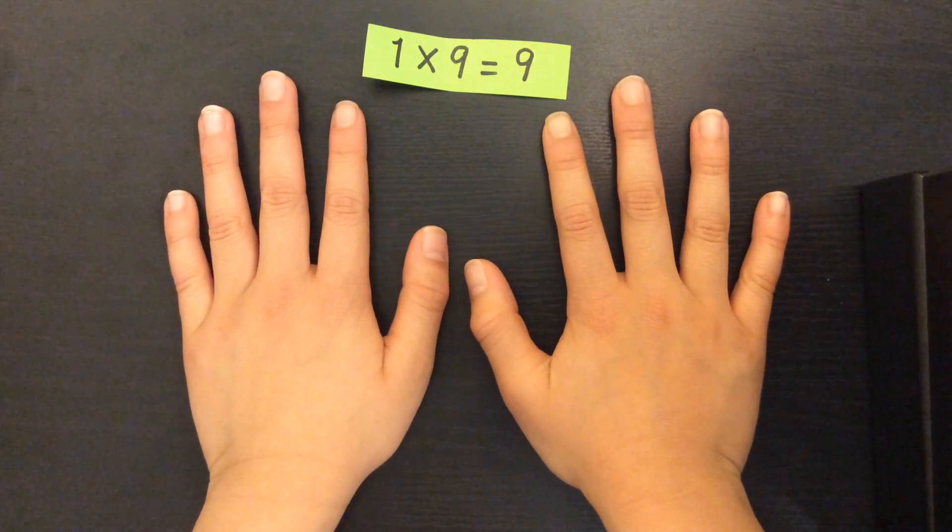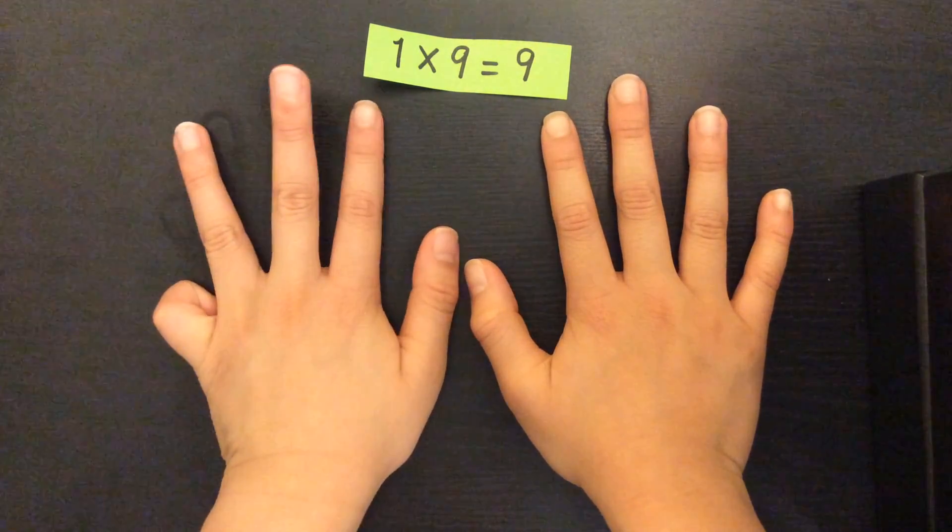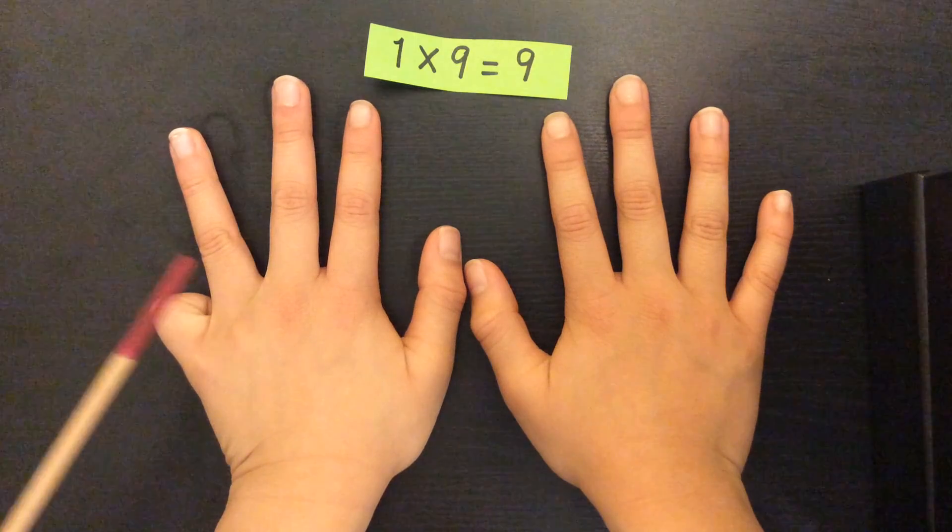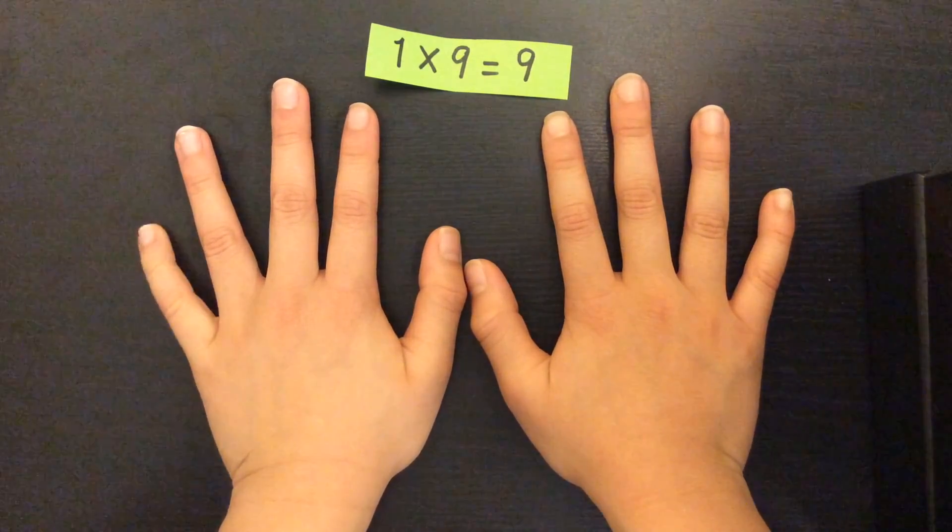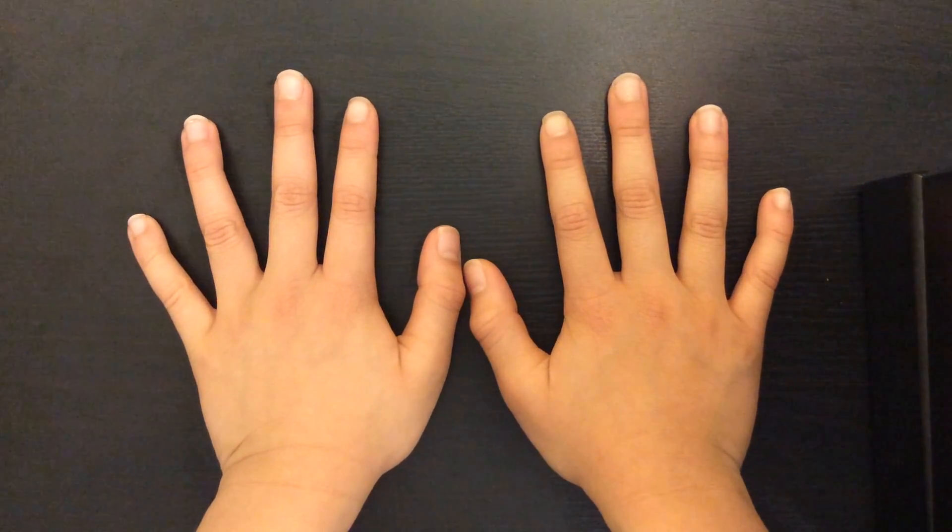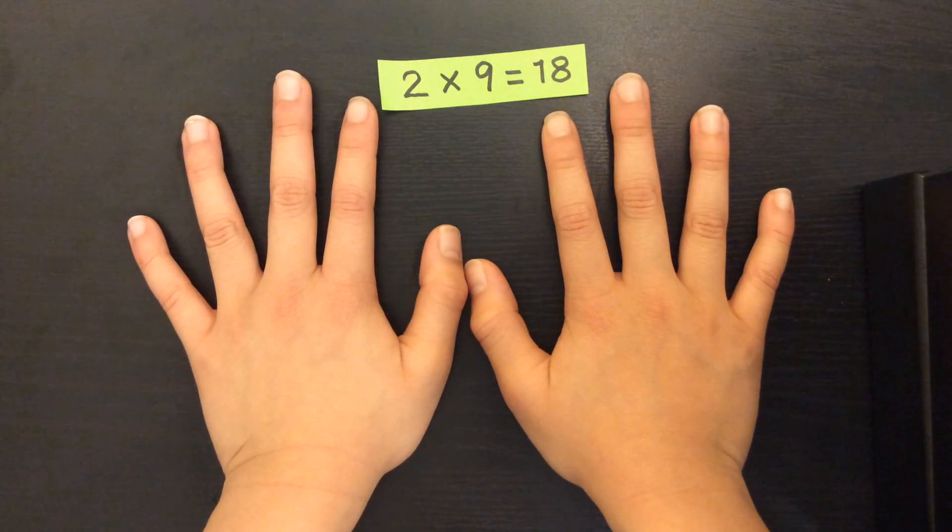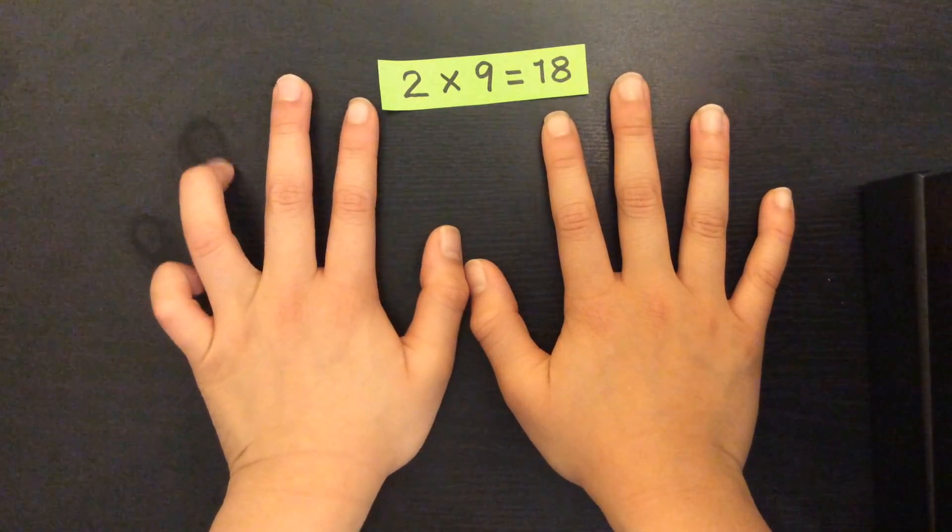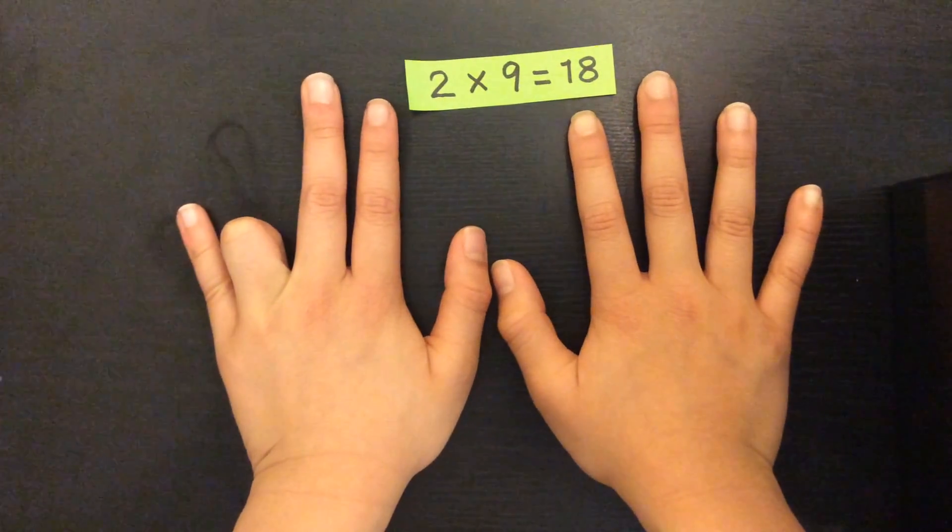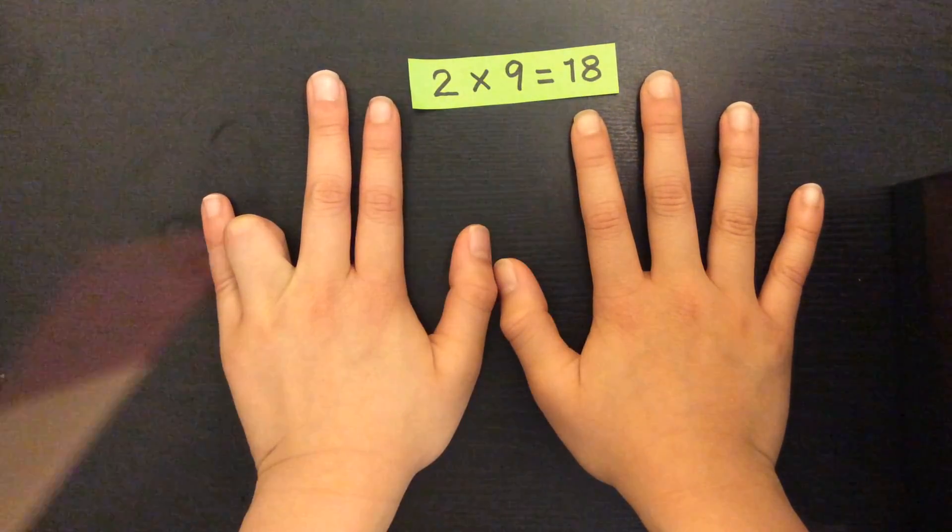Now, one times nine. I close only my first finger. Nine remains. One times nine is nine. Two times nine. I close only my second finger. I have one and eight. That's eighteen.